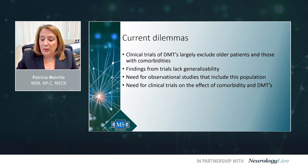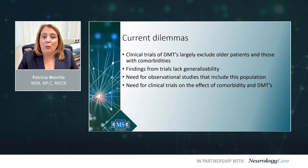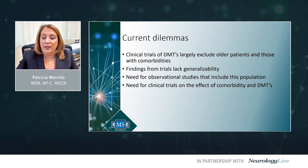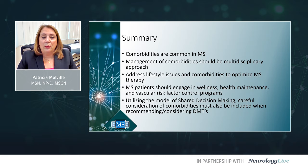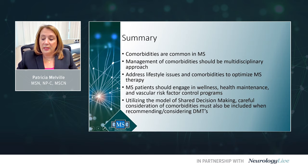Current dilemmas: clinical trials for DMTs largely exclude older patients and those with comorbidities, so when drugs are approved, we're using them in a population that has not been studied. The findings from trials lack generalizability, and there is a need for observational studies and clinical trials examining the effect of comorbidity and disease-modifying therapies. In summary, comorbidities are common in MS, management should be multidisciplinary, we should address lifestyle issues and comorbidities to optimize MS therapies, encourage wellness and vascular risk factor control, and use shared decision-making with careful consideration of comorbidities when recommending disease-modifying therapies.